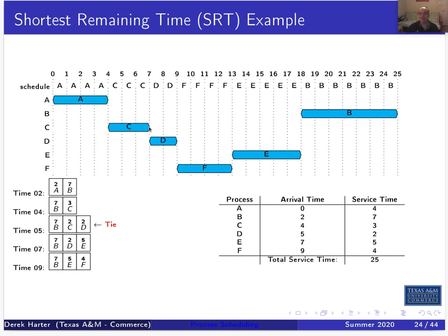At time five, D arrives with a remaining time of two. C ran once so it also has a remaining time of two, and B still has seven. We have a tie. A good tie-breaker is to let the currently running process continue, or equivalently let the process that arrived first keep running. So C continues running until time seven.